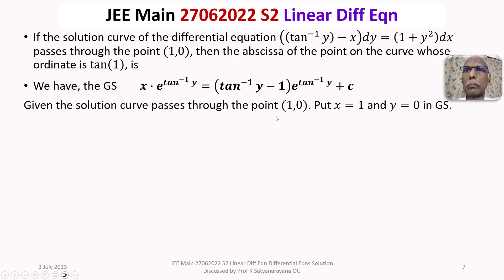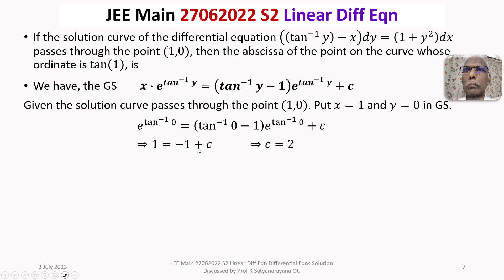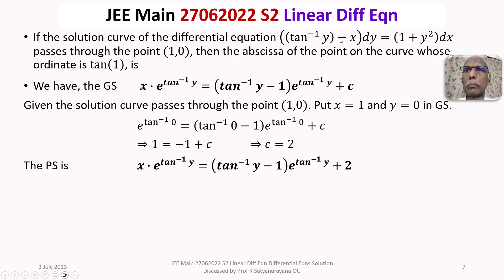Since the solution curve passes through (1, 0), we substitute x equals 1 and y equals 0. We get 1 times e to the power tan inverse 0 equals (tan inverse 0 minus 1) times e to the power tan inverse 0 plus c. Since tan inverse 0 is 0 and e to the power 0 is 1, this gives 1 equals (0 minus 1) plus c, so 1 equals minus 1 plus c, therefore c equals 2.